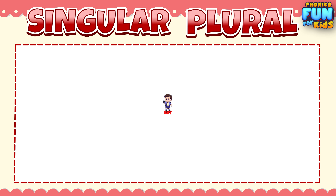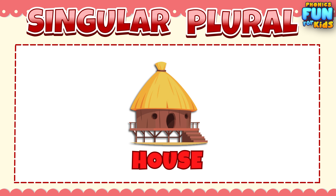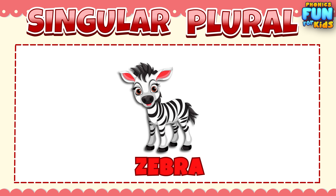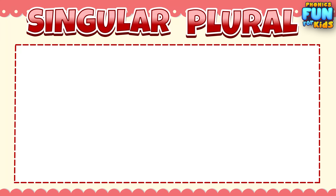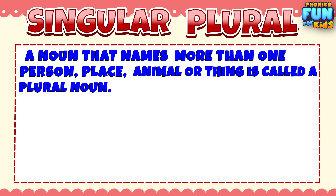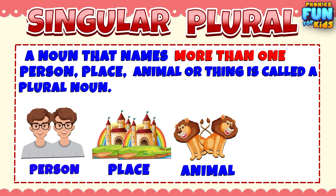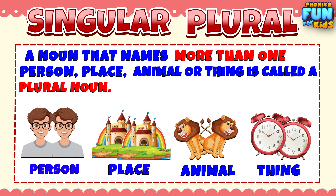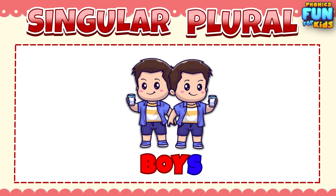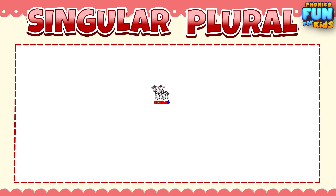For example, singular nouns: a boy, a house, a zebra, a ball. A noun that names more than one person, place, animal, and thing is called a plural noun. For example: boys, houses, zebras, balls.